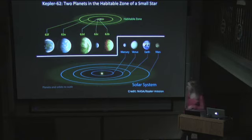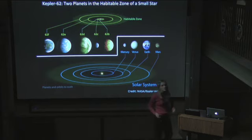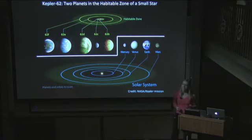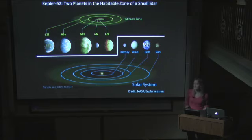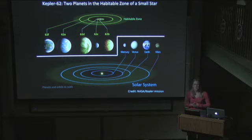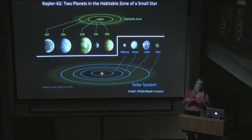Kepler 62 has two planets — Kepler 62F and 62E — in the habitable zone. The planets are shown here to scale, so you can see that 62E and F are roughly one and a half to two times the size of Earth. That means there's a good chance those planets are rocky. We haven't actually measured the masses of these objects, so we're not certain, but there's a good chance. So maybe these would be good places to buy a second home. You might also notice that the habitable zone for Kepler 62 seems a little bit smaller and closer to the star than the Sun's habitable zone.